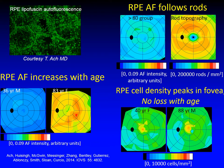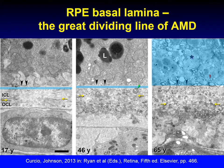The density of RPE cells in the central retina does not change with age, despite the accumulation of lipofuscin, consistent with previous studies. RPE is supported by Bruch's membrane, which is a substrate in addition to being a vessel wall. Bruch's membrane is usually thought of as a five-layer structure: the basal lamina of the RPE and choriocapillaris, the inner and outer collagenous layers, with the elastic layer between.